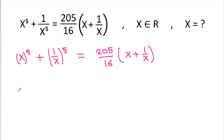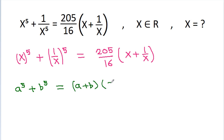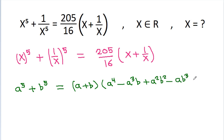We use the identity: a power 5 plus b power 5 is equal to a plus b times a power 4 minus a cubed b plus a squared b squared minus a b cubed plus b power 4.